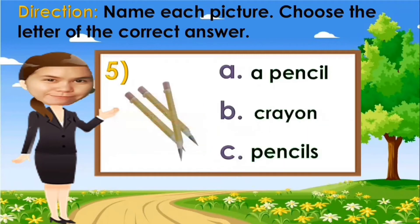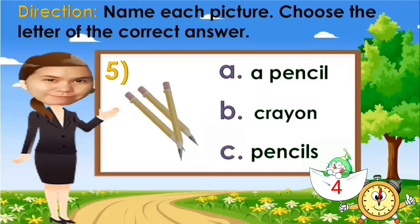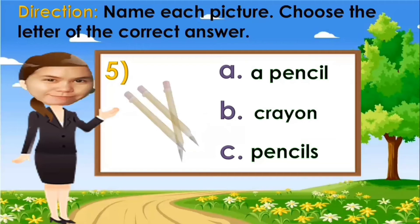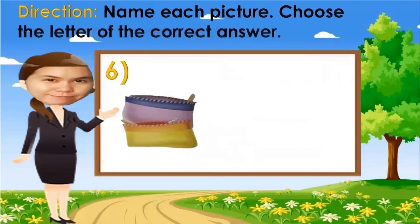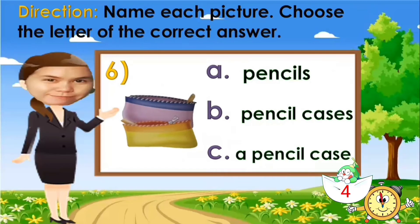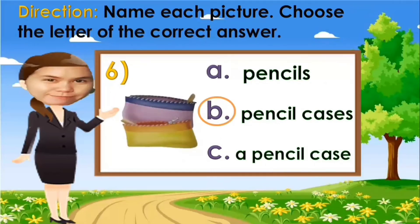Number five. A. A pencil. B. Crayon. C. Pencils. Your time starts now. Time is up. The answer is letter C. Next. A. Pencils. B. Pencil cases. C. A pencil case. Your time starts now. Time is up. The answer is letter B: pencil cases. Next.